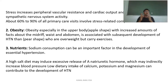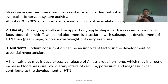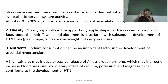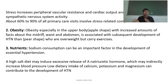Second is obesity. A person with an upper body apple shape — where fat is concentrated on the midriff, waist, or abdomen — is associated with subsequent development of hypertension. Persons with a pear shape who are overweight but carry out exercise have a lower risk for hypertension compared to those with an apple shape who have more fat.